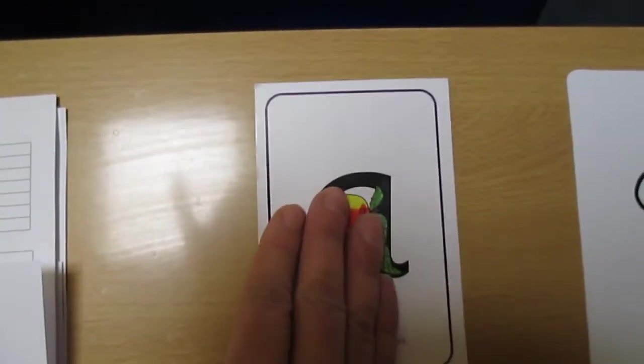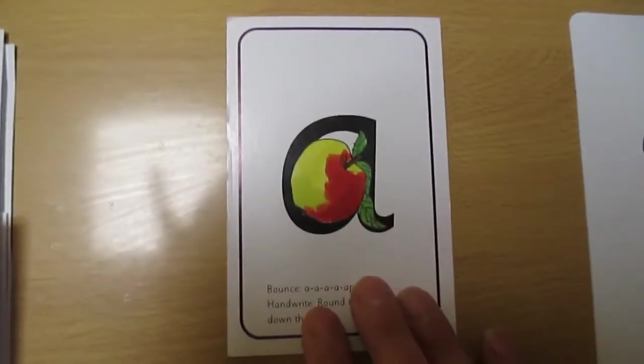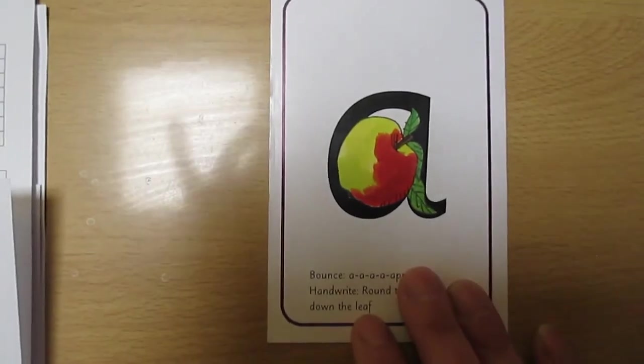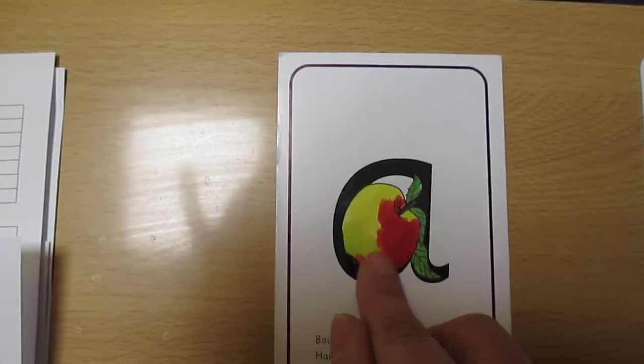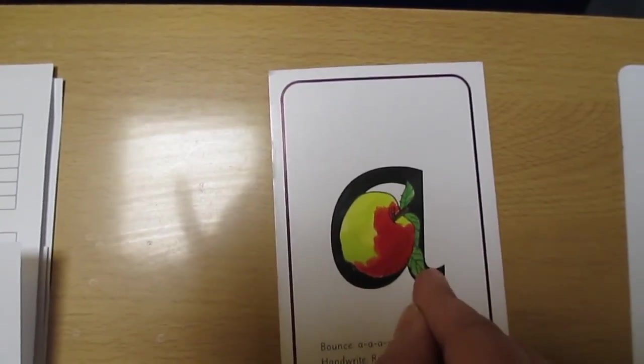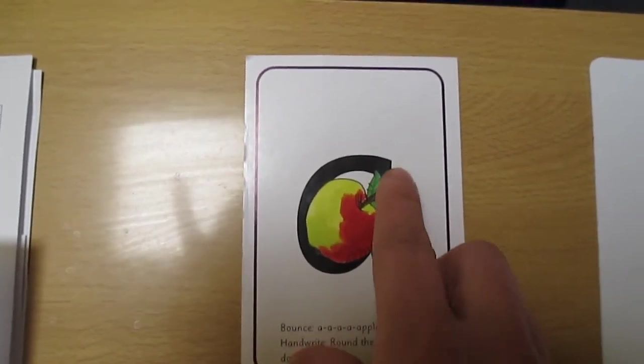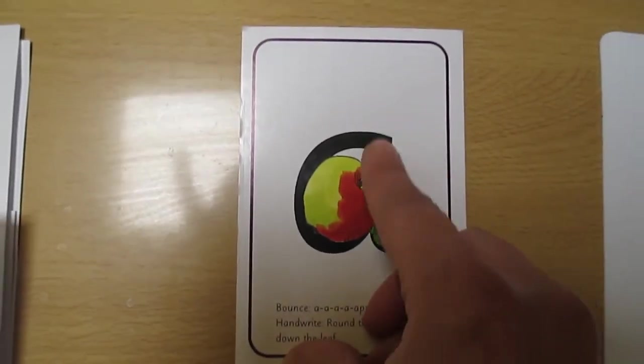So let's have a look at how we write this letter. When we write the letter A or the 'ah' sound, we start in this corner here and we go round the apple and down the leaf. I'll do that again. Round the apple and down the leaf.